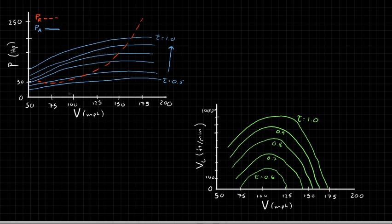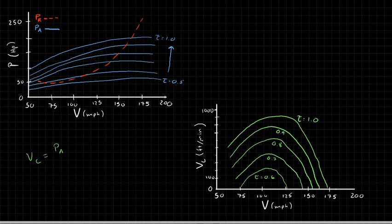The power required is a single curve, and at some points it is higher than the maximum power available, but at most points at this altitude the power required falls within the range of power available. The rate of climb can be approximated as the power available minus the power required, divided by the weight. So the rate of climb is proportional to the difference — this gap — between the power available and the power required.